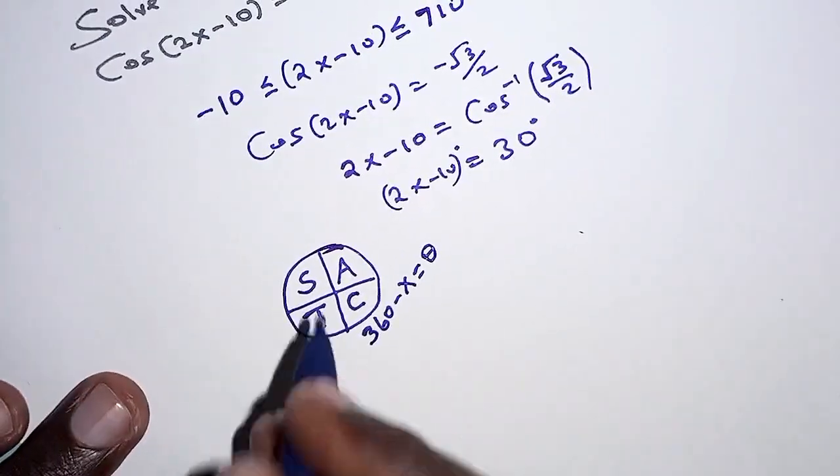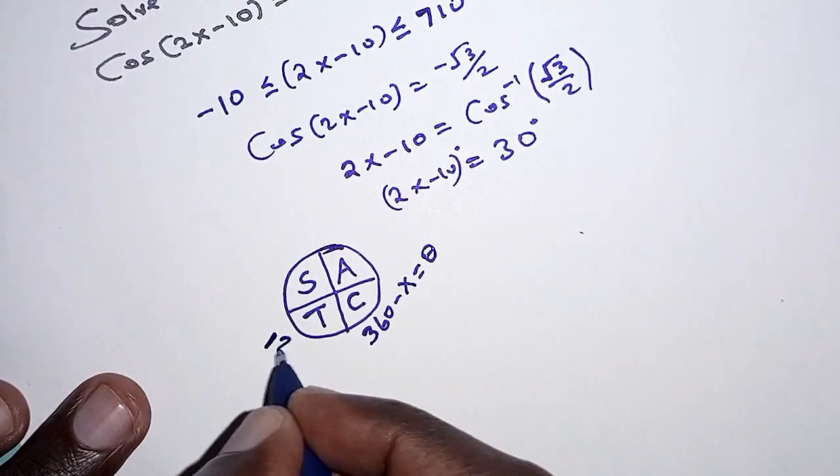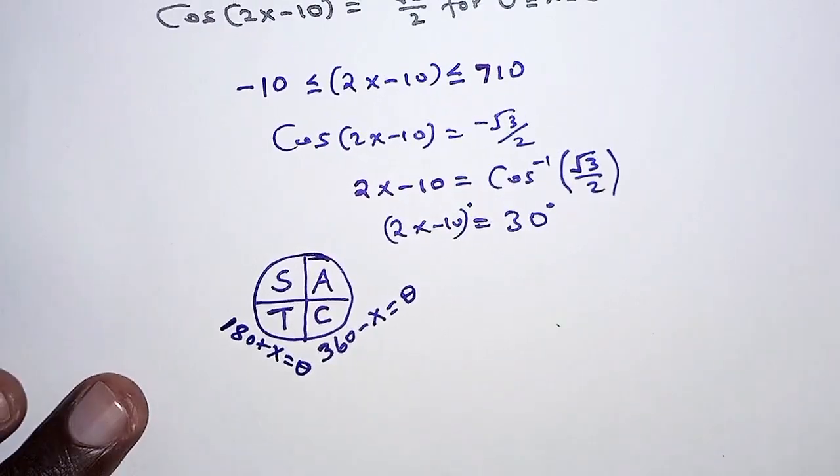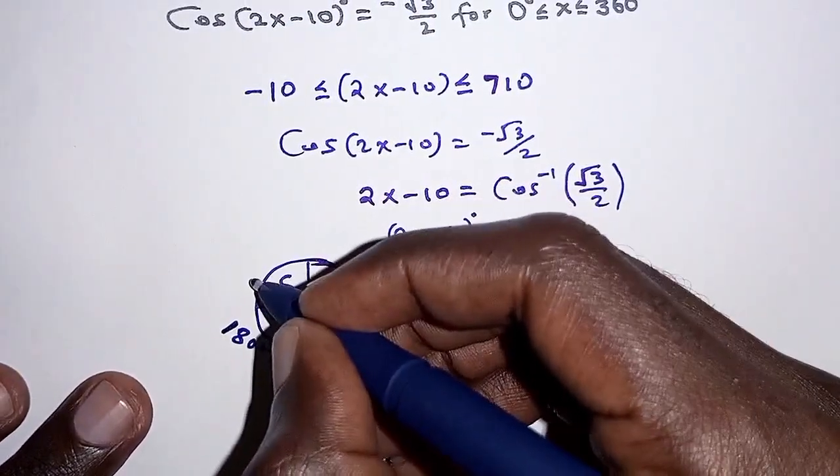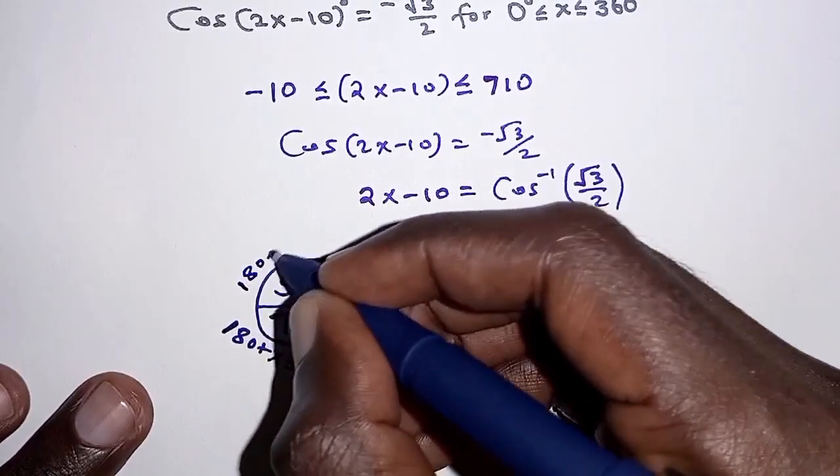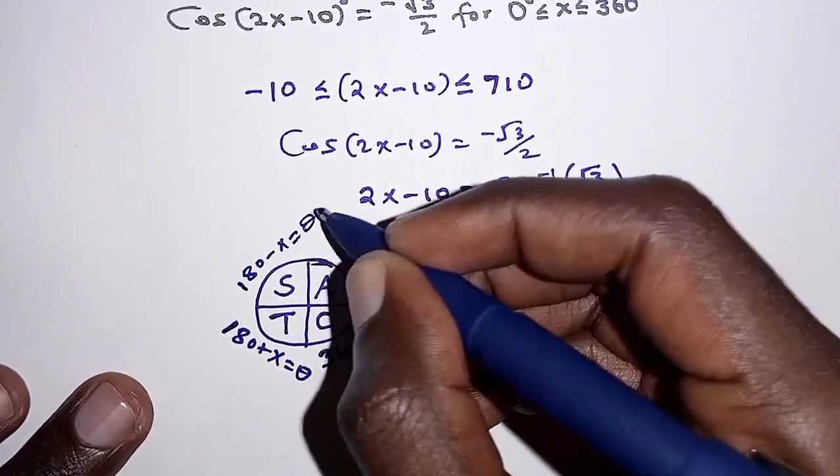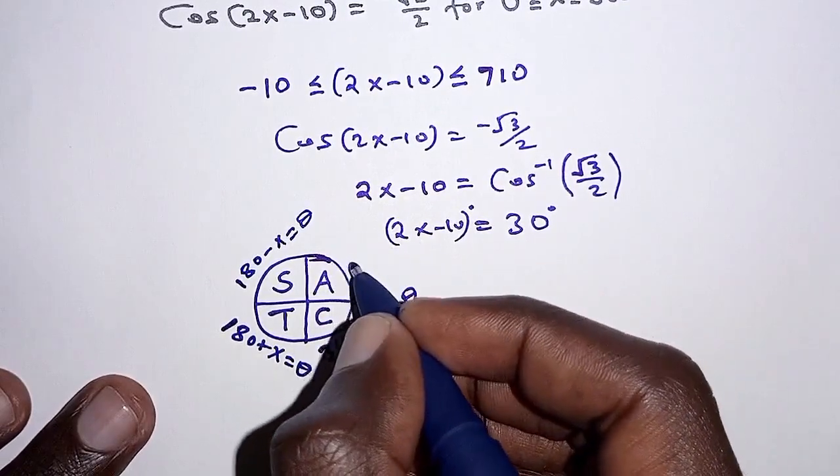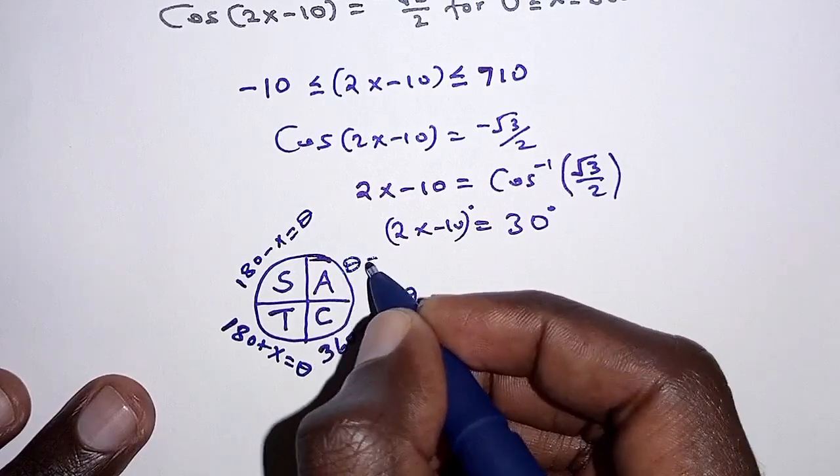Now here theta is obtained as 180 plus the acute angle. Here theta is 180 minus the acute angle. And here theta is an acute angle, and therefore we just say theta is equal to x.